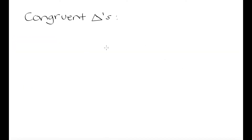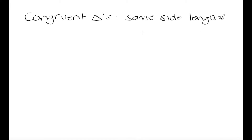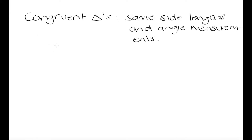In today's lesson we're going to be talking about congruency of triangles. This might be a review for some of you from previous grades, but congruent triangles are triangles that are going to have the same side lengths and the same angle measurements. So if two triangles are congruent, those triangles are going to have the same lengths of their sides and their angles are going to be the same as well.